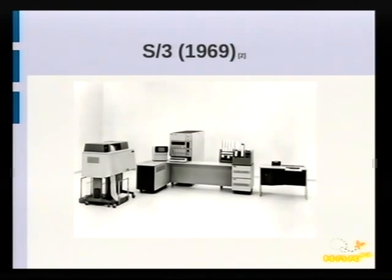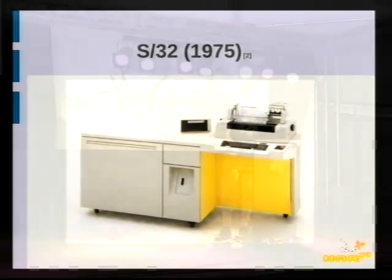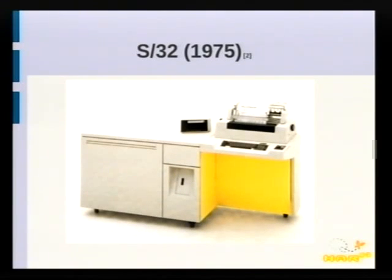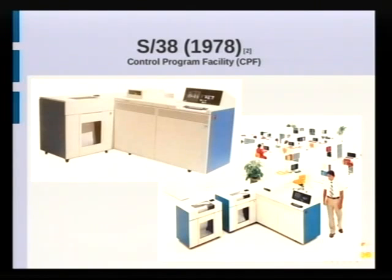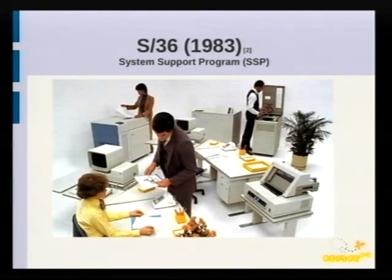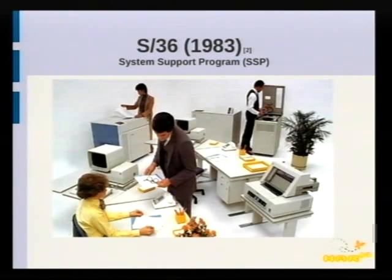This is the first one that came out of Rochester. Yeah, I like pictures. Then it was followed up by the System 32 and the System 34. And then the System 38 was created — that was actually a whole new system, and the operating system software that ran on it was called Control Program Facility. Then IBM created another system, the System 36, as a follow-up of the System 34, because many of its customers didn't like the System 38 — it was too big and expensive for their needs — and they wanted to satisfy the customer's needs, so they did create the System 36.